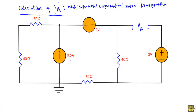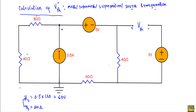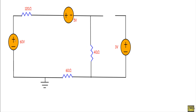We have a current source of 0.5 ampere connected in parallel with a resistance of 120 ohm. From the Source Transformation Theorem, when we have a current source in parallel with a resistance, we can convert that current source to a voltage source V_s in series with that resistance. Here R_s equals 120 ohm, and V_s equals I_s times R_s which is 0.5 times 120, so V_s equals 60 volt. The current source is supplying current upward, so the positive terminal of V_s will be in the upward direction.